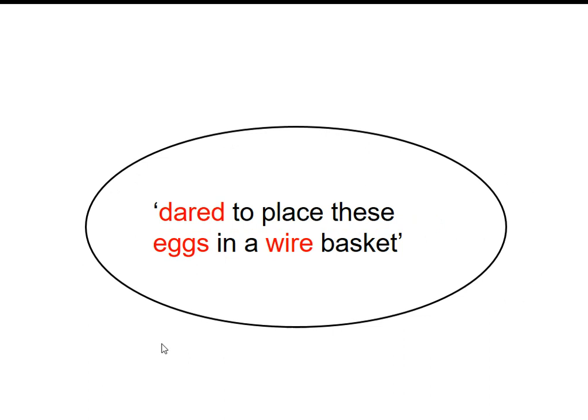Here, dared to place these eggs in a wire basket. Dharker is sort of again expressing her admiration for these people who have risked everything to move here. She uses the word dared, the verb dared, to imply that they're willing to take lots of risks, that they are brave, that they are courageous, that they are taking a chance. She thinks that's impressive. She's not saying it's disgusting, she thinks it's amazing that they are willing to take that risk with their lives because not many people would.